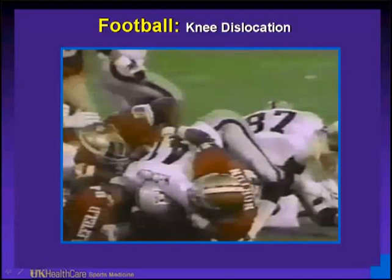In professional football, we see knee dislocations. In this Oakland Raider taken down by a 49er, you can see where his knee is in 80 degrees of hyperextension. This is a knee dislocation. He did not return to professional sports — it is very difficult to come back from a knee dislocation.